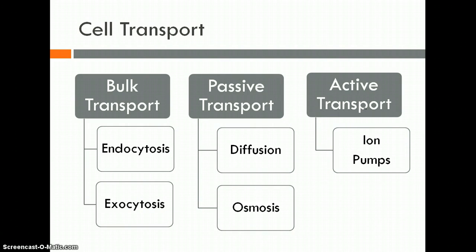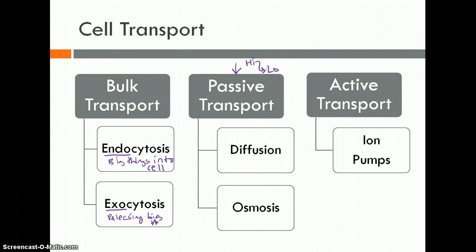Here's our final flow chart to recap. Active transport: one example is an ion pump using channels to pump from low to high. Passive transport: simply moving molecules from high downstream to low, no energy required, in the form of diffusion and osmosis. And finally, bulk transport — big, big quantities moving in or out. Endocytosis is big things being absorbed into the cell; exocytosis is releasing big things, either waste or products the cell has produced. That's a look at all the different variations of cell transport.